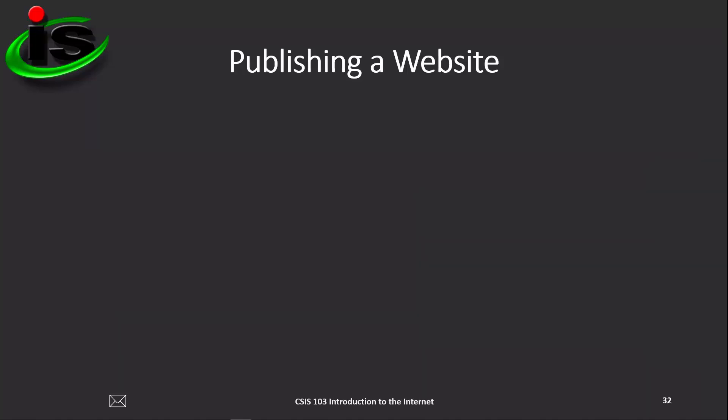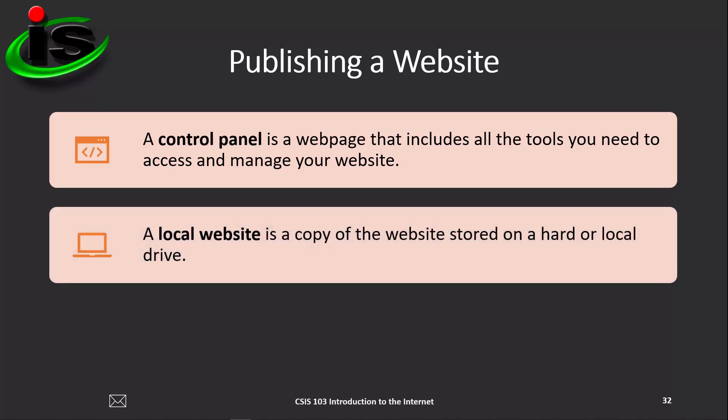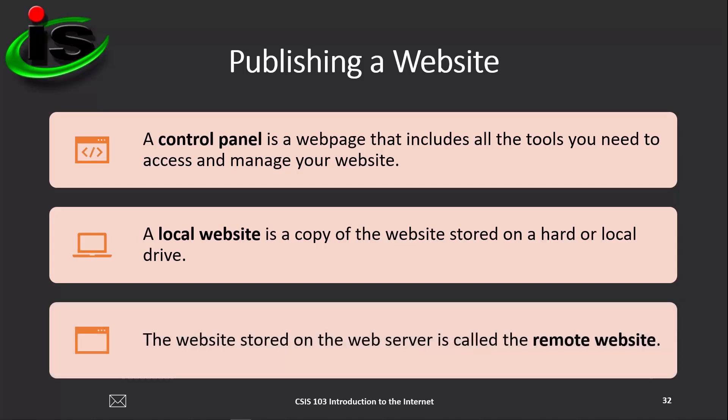When publishing a website, your web hosting provider may offer a control panel — a webpage that includes all the tools you need to access and manage your website. A local website is a copy stored on a hard or local drive, such as your computer or a company server. The website stored on the web server is called the remote website.